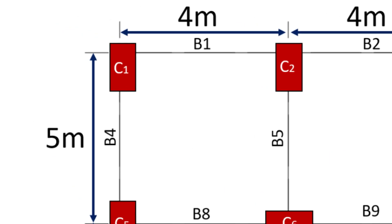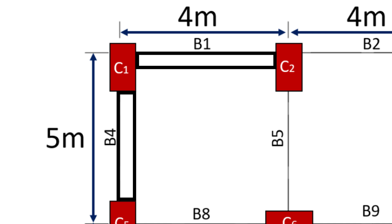Now let's see the orientation of column 1. To decide the orientation of column 1, we need to identify the major axis of bending for this column. It can be seen that column 1 is connected to beams B1 and B4, with B4 having a larger span than B1. This means that the moment due to the load carried by B4 will be greater than that of B1. As a result, the dimension of the column perpendicular to B4 will need to resist a greater moment than the one perpendicular to B1.